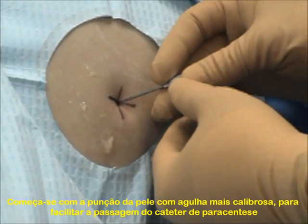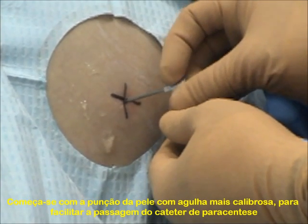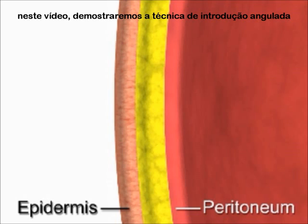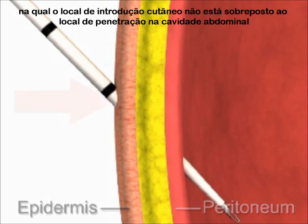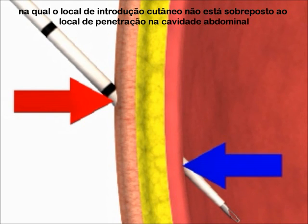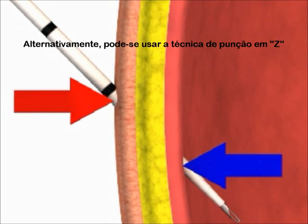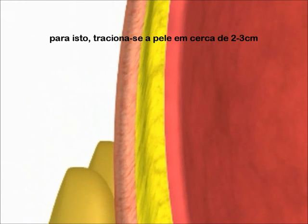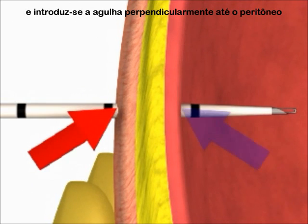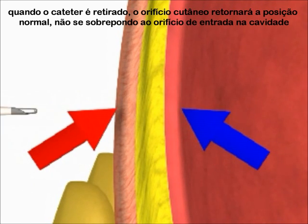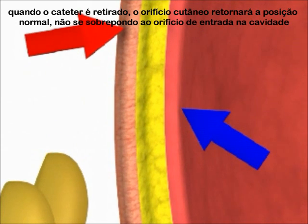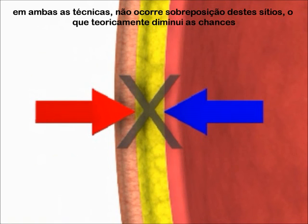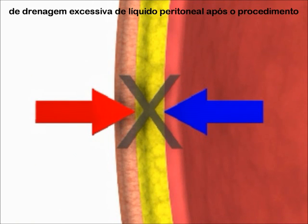Begin by making a small puncture in the skin with either a scalpel or a large gauge needle to facilitate advancement of the paracentesis catheter. Next, advance the catheter through the epidermis. In this video, we will demonstrate an angular entry technique in which the cutaneous site of insertion does not directly overlie the site of penetration into the peritoneal cavity. Alternatively, a Z-track technique may be used, in which the cutaneous tissues are pulled two centimeters caudad prior to needle insertion and advancement through the peritoneum. When the catheter is withdrawn at the end of the procedure, the cutaneous entry site will retract to its original position. Both techniques ensure that the cutaneous and peritoneal insertion sites do not directly overlie each other, theoretically minimizing the risk of ascitic fluid leak following the procedure.